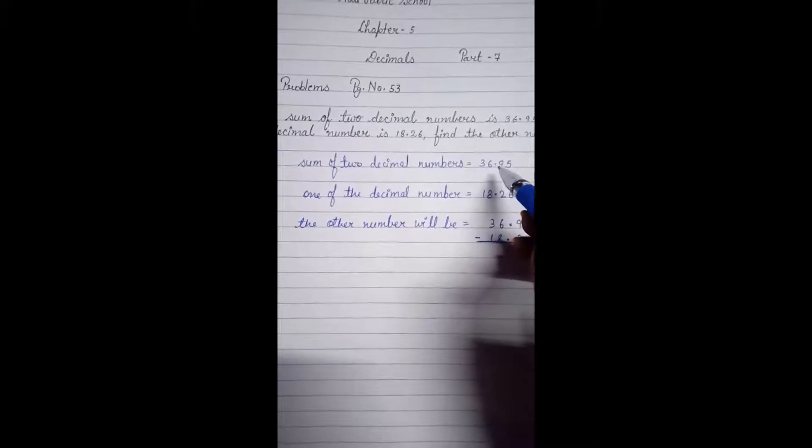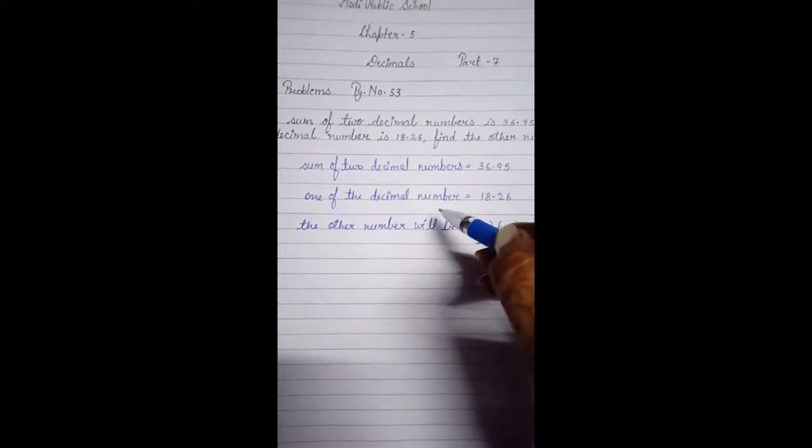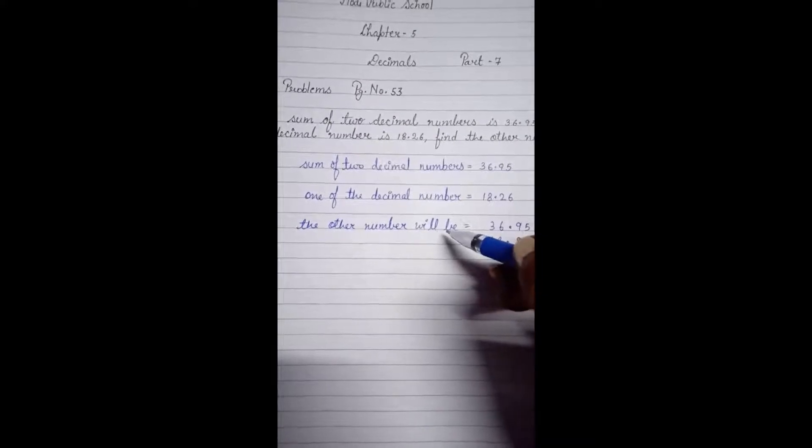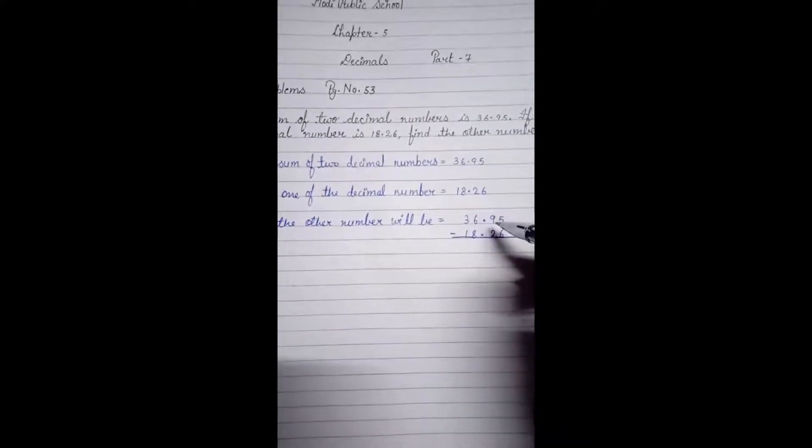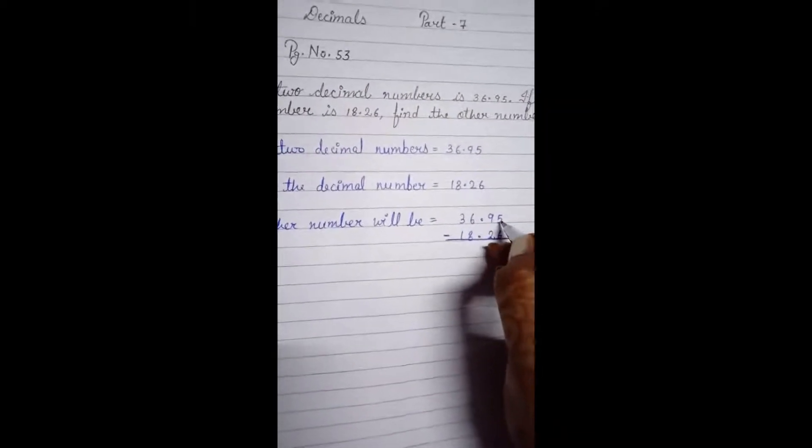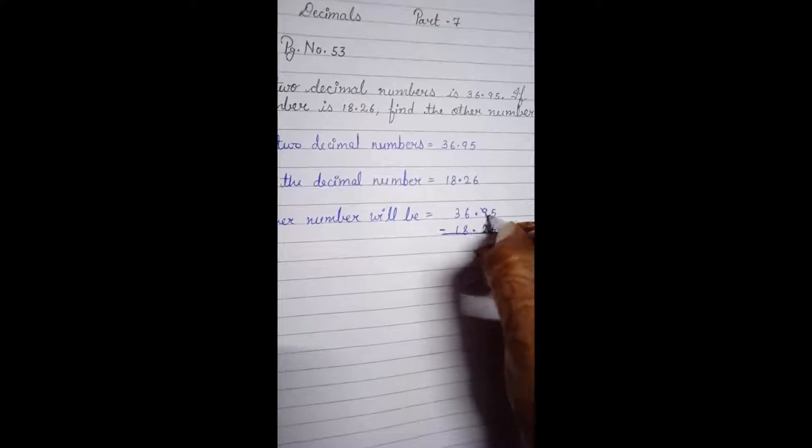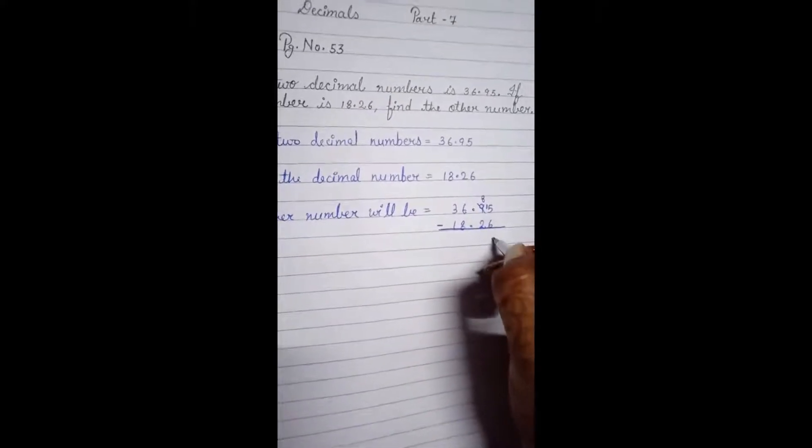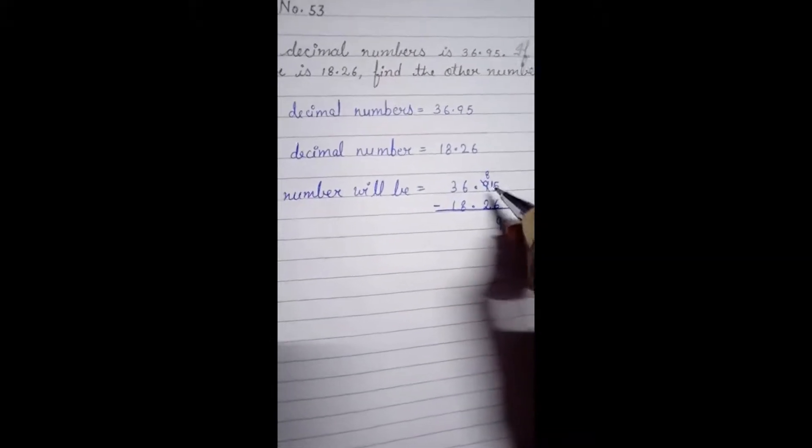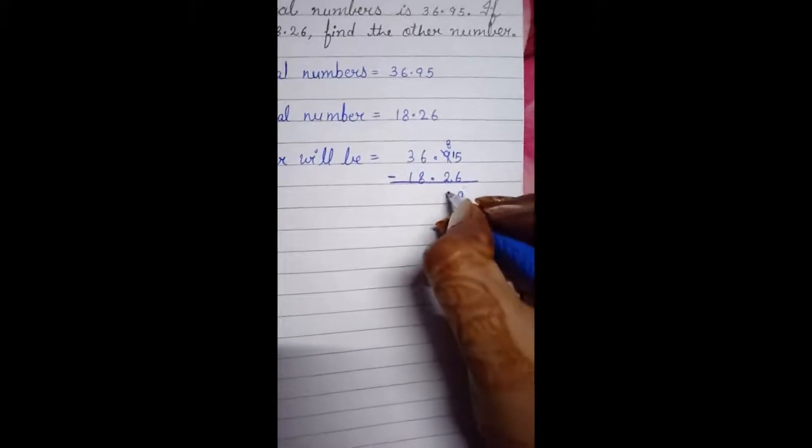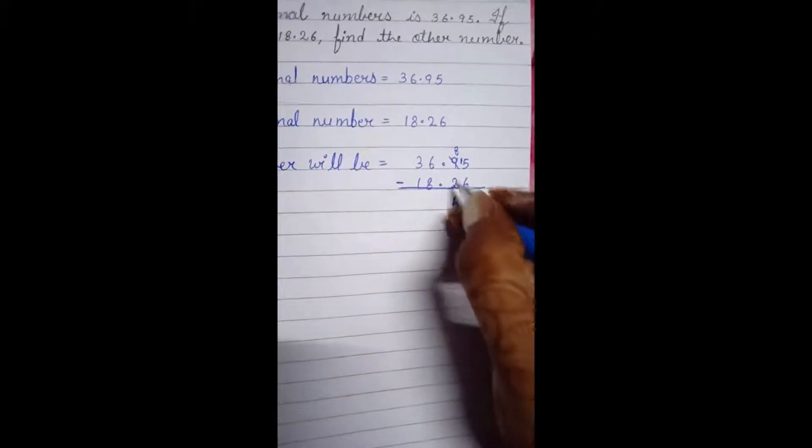We have to take a borrow. Now 15 minus 6 is 9. Now 8 minus 2 is 6. Now we will copy down the decimal point.